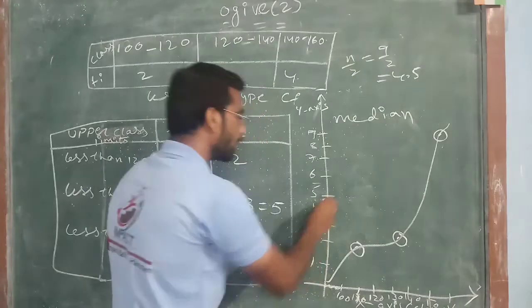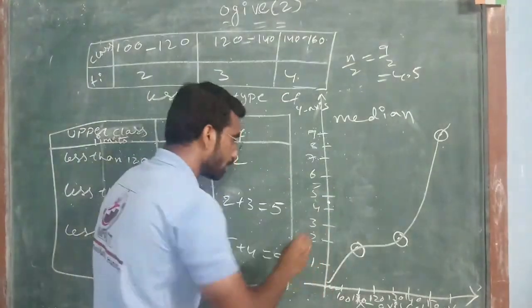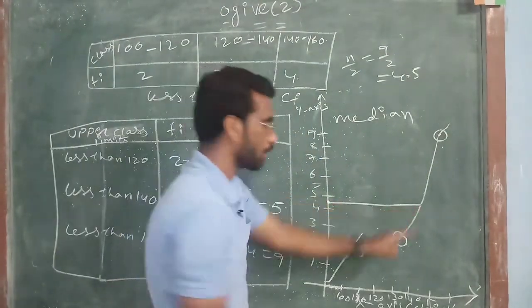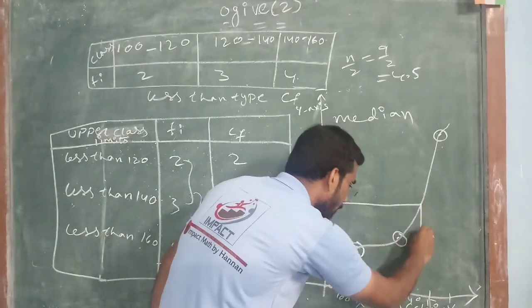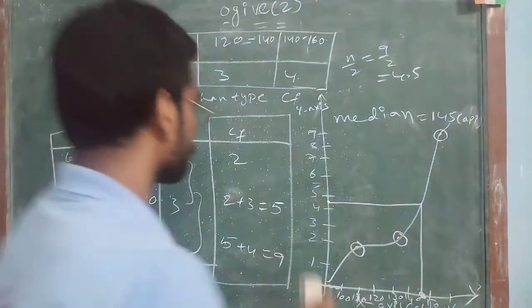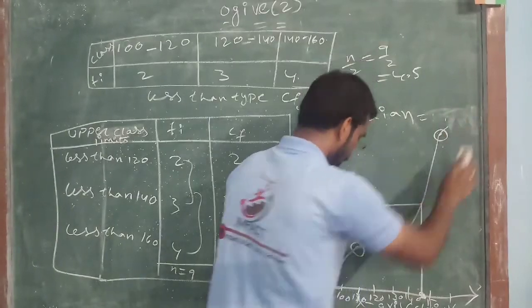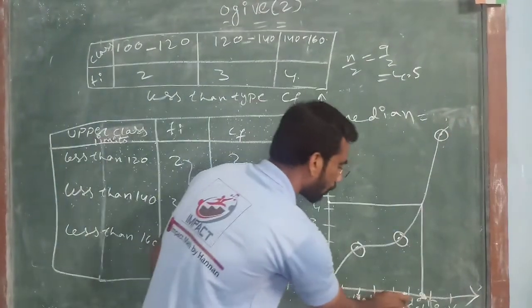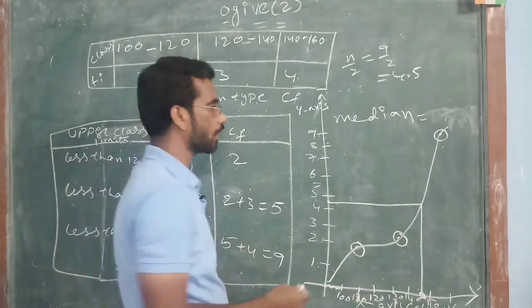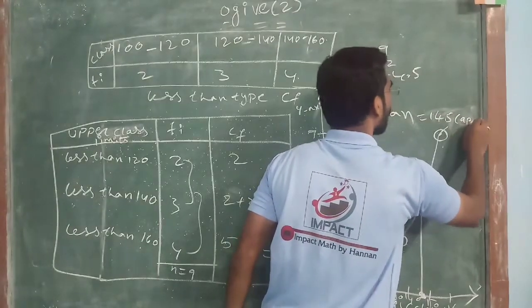4.5 will be in between 4 and 5. So, join from this. Here to... Now, where these two are touching? Join it from there to here. Now, so, median is equal to... How much? It is in between 140 and 150 approximately. So, I am taking 145 approximate value.